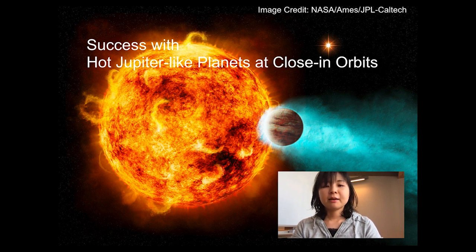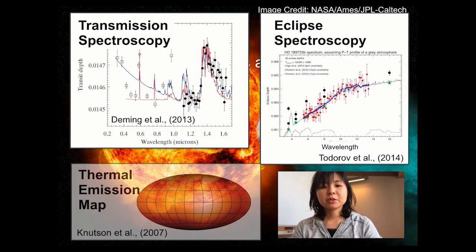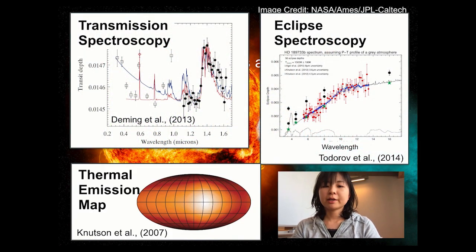These three techniques have been successful with hot Jupiter-like planets and have revealed some of the atmospheric species and thermal structures. In order to apply them to smaller, potentially habitable planets, however, we need to push the current technology to its limit.